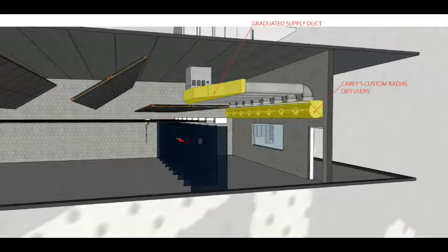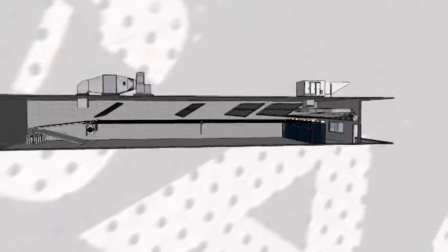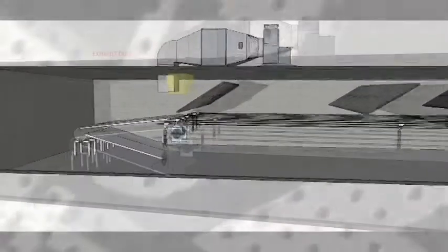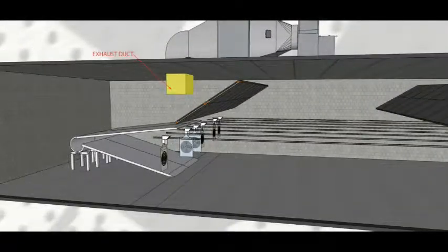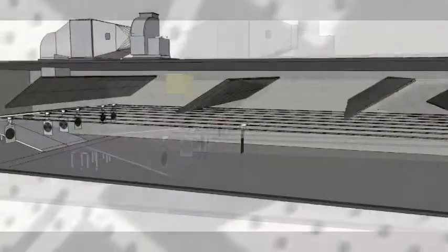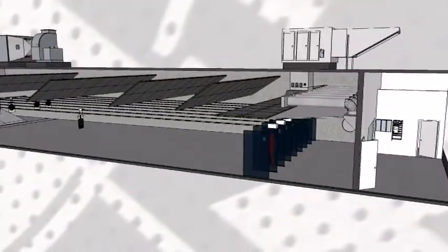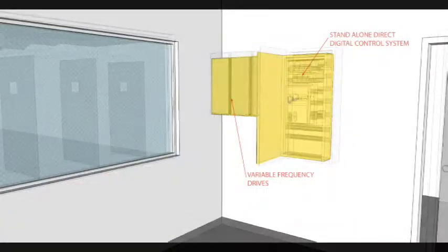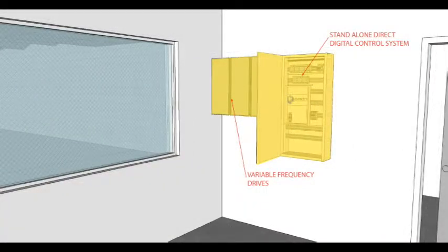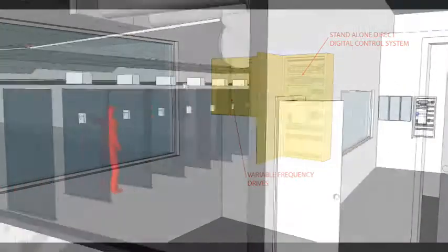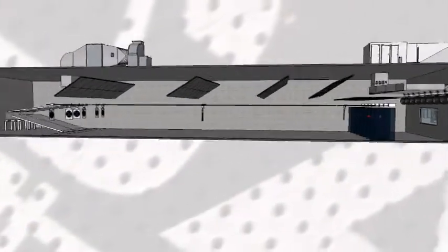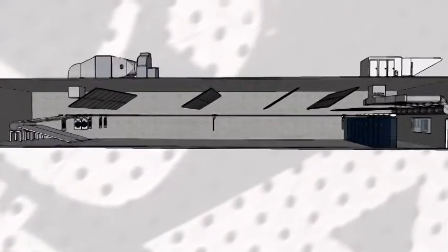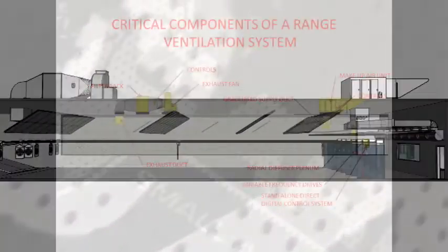The graduated supply duct and carries custom radial diffusers. The exhaust duct. The stand-alone direct digital control system and the variable frequency drives or VFDs. These are the main components to a purge system.